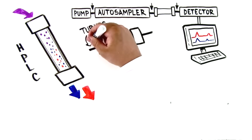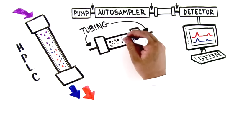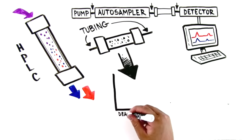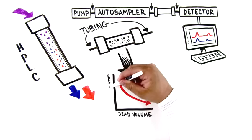The tubing before and especially behind the column strongly affect the quality of chromatographic separations because every additional dead volume can significantly decrease the efficiency.